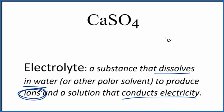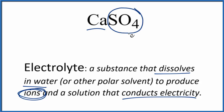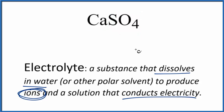So for calcium sulfate, we have calcium, that's a metal, and then this whole sulfate ion here, this group of non-metals. Metal and non-metals — that's going to be an ionic compound.